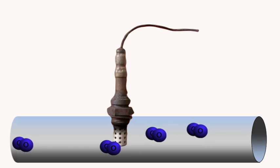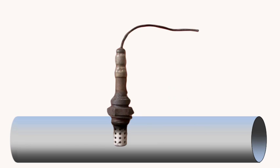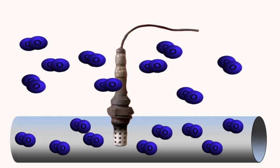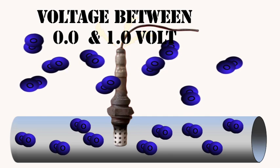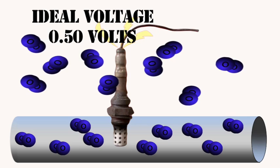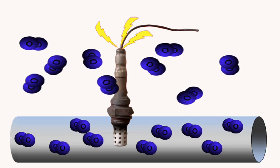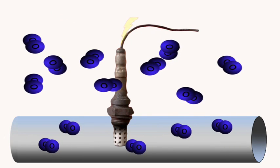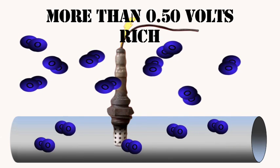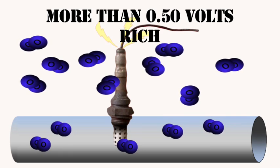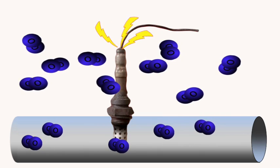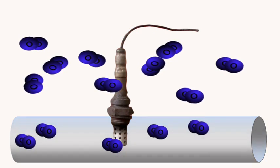From here on we refer to these conditions as rich and lean. The O2 sensor produces voltage based on the difference between the oxygen inside the exhaust as compared to the oxygen outside the exhaust. The voltage produced falls between 0 and 1 volt, with the ideal fuel mixture falling near half a volt. If there is a lot of oxygen in the exhaust the sensor produces little voltage, which can indicate a lean condition. If there is very little oxygen in the exhaust the sensor produces a higher voltage, indicating a possible rich condition. The computer takes these signals and adjusts the fuel mixture accordingly to keep the voltage and mixture as close to perfect combustion as it can get.